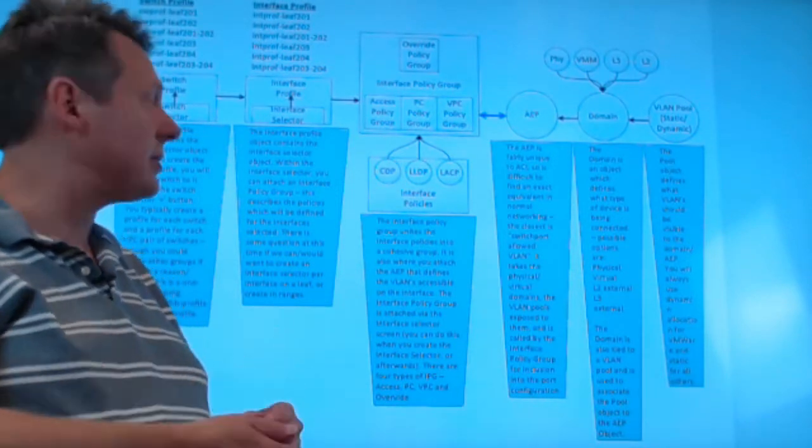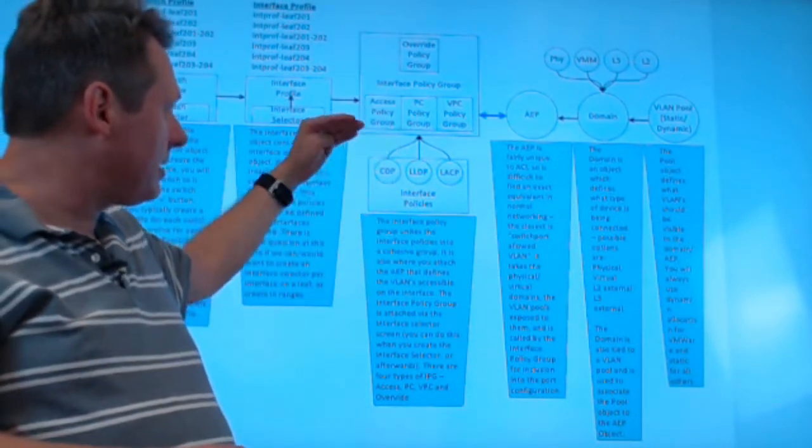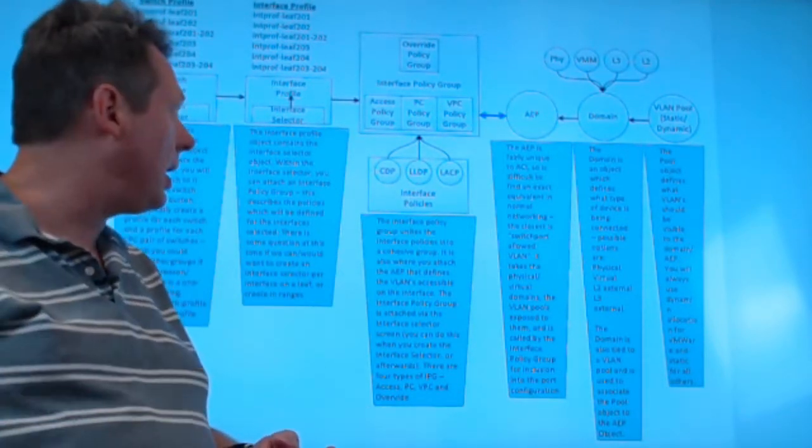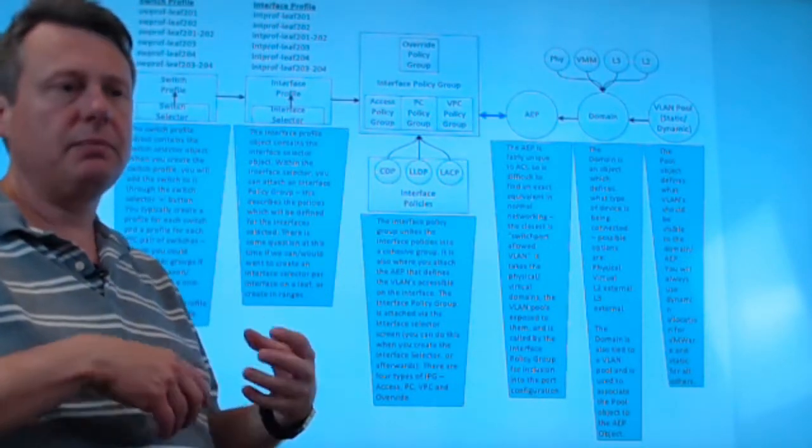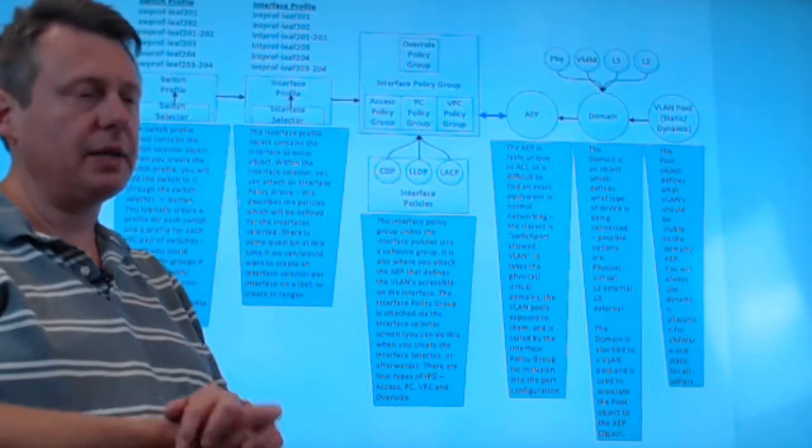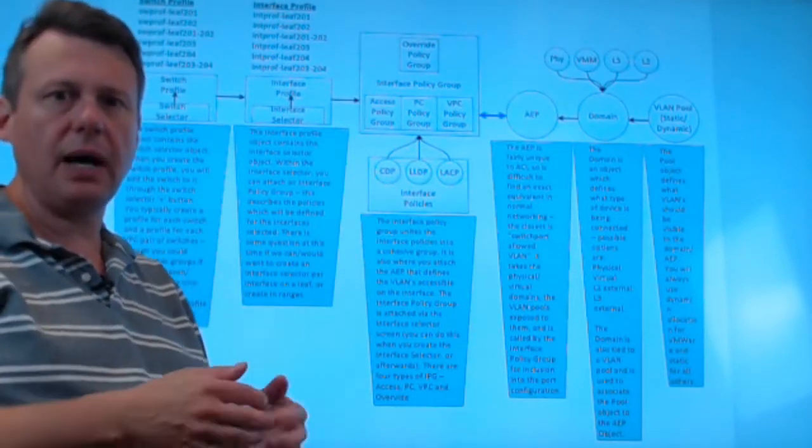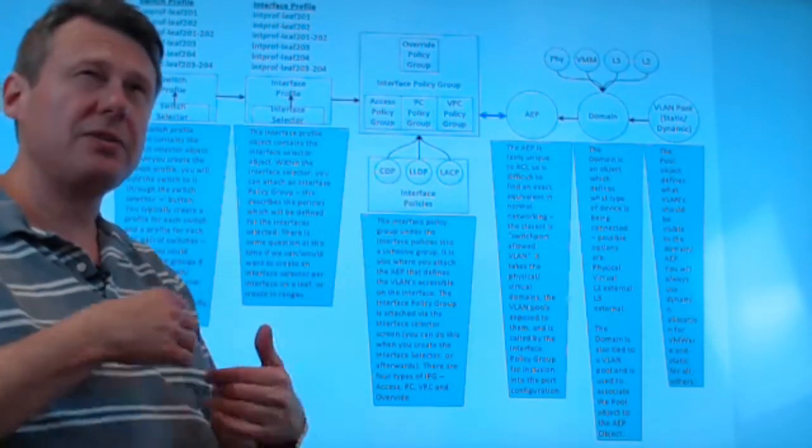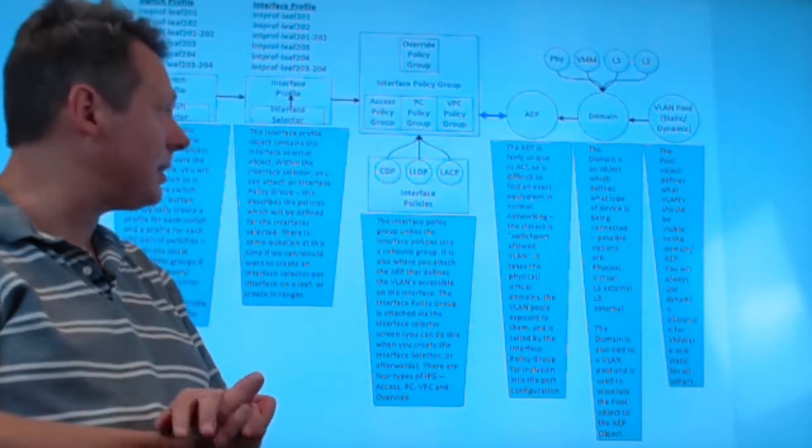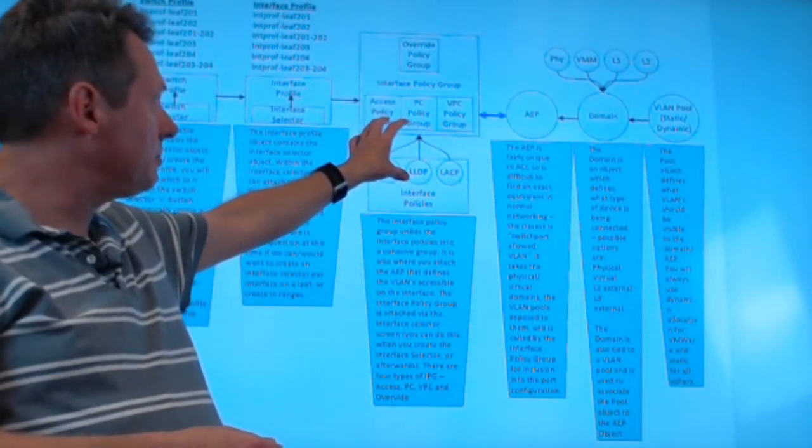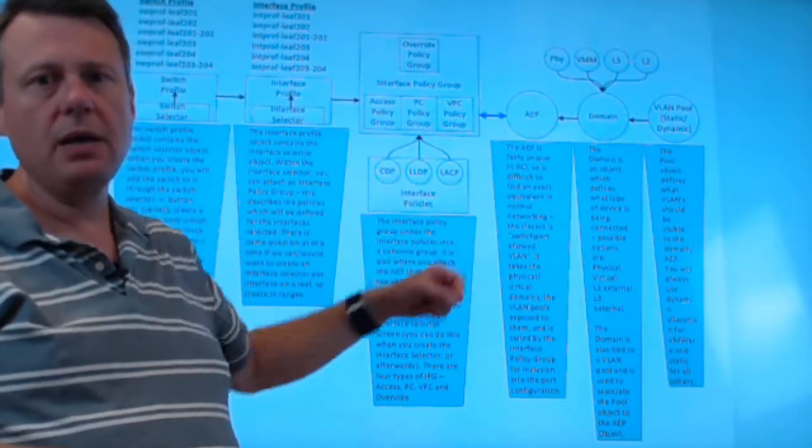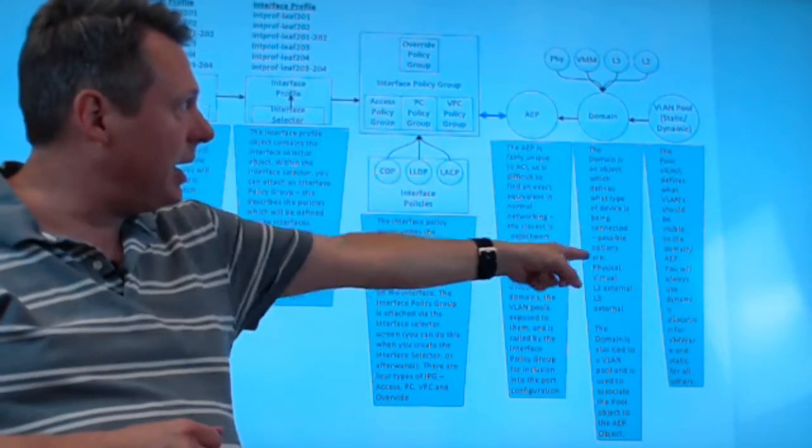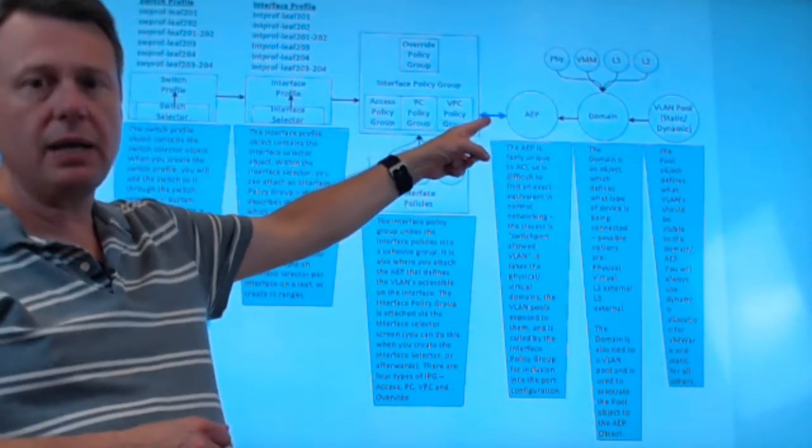And then under that policy group, I'm going to grab whichever of these policies I want. I want CDP on. I want LLDP on. I want LACP active. You know, maybe I've got a storm control policy I want on there or whatever, right? I want auto detect for my speed and duplex. I grab all these interface policies. I'll say there might be fifteen to eighteen interface policies. I tie them into my policy group. And in the policy group, I call this AEP. When I call this AEP into the policy group, it automatically ties in the VLAN pool and the domain.